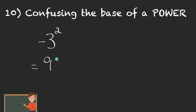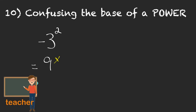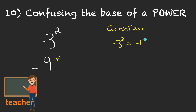The answer is actually not positive 9. You've just misinterpreted what the base of the power is. Let me make some notes over here showing you how you can correct this. So negative 3 squared — that negative is not part of the base of the power. It's not in brackets with the 3. So negative 3 squared, you need to think of that as a negative 1 multiplied by 3 squared, which means what we have is negative 1 times 3 times 3, which is, of course, negative 9.